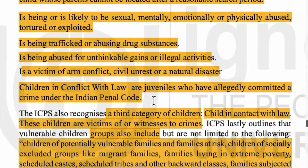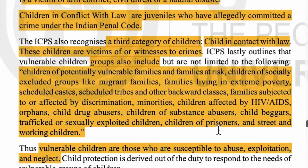Beyond those two categories, there are two more. The third category is Child in Contact with Law — children who are witnesses or victims of a crime. For example, a child who witnessed a bomb blast and saw who planted the bomb. Such children are called Children in Contact with Law, and they are highly vulnerable because their lives are always at risk.